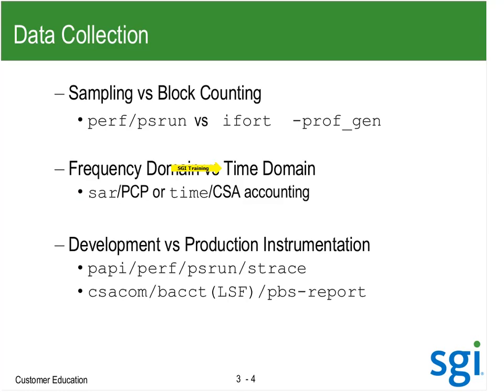So if it's an eight-hour run, how much is user, I/O wait, and memory wait? I can be looking at good SAR data where everything looks normal, but then bad time domain — how long it's taking for things to run. This is something known as Little's Law or Little's Utilization Law. When I have both system activity and time domain information, I can create an algebraic equation, apply Little's Utilization Law, and do performance modeling.